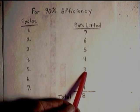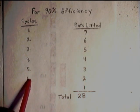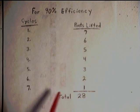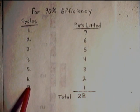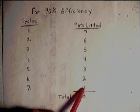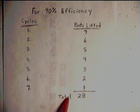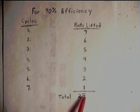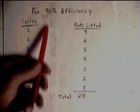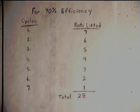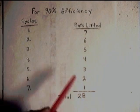After the fifth cycle, three pints are lifted. After the sixth cycle, two pints are lifted. After the seventh cycle, one pint of water is lifted back up to the top tank. Stopping at the seventh cycle, a total of twenty-eight pints are lifted back up to the top tank.